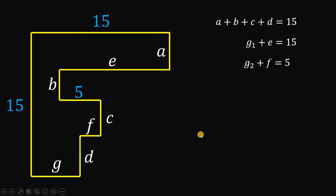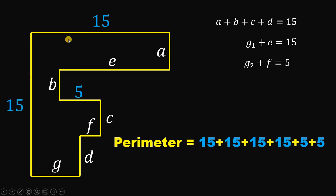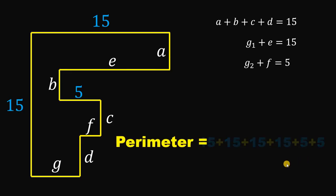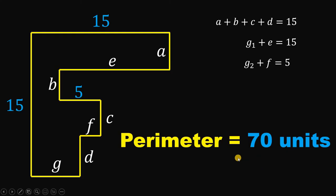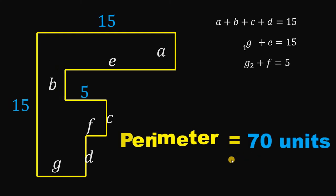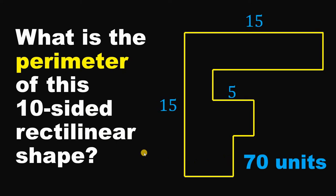We can now find the perimeter. The perimeter equals: 15 plus 15 plus the sum of A, B, C, and D which is 15, plus G sub 1 plus E which is 15, plus G sub 2 plus F which is 5, plus the last side which is 5. Adding all of these: 15 plus 15 plus 15 plus 15 plus 5 plus 5 equals a total of 70 units. Therefore, our answer is 70 units.